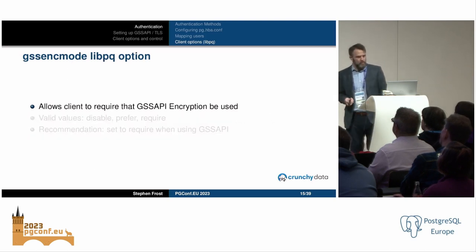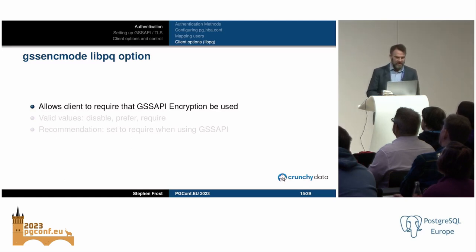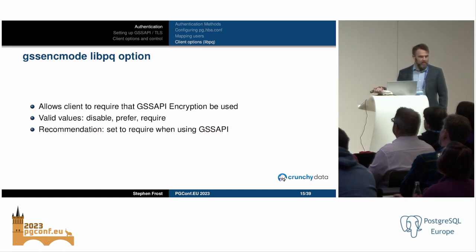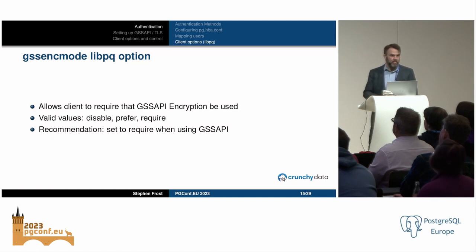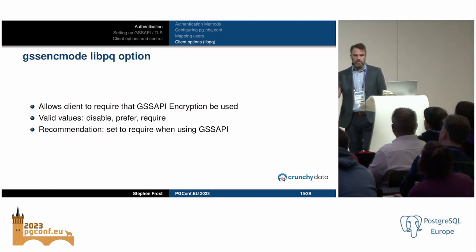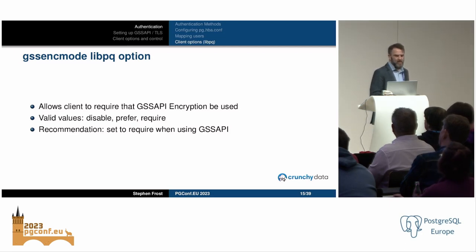Similar to SSL mode, there is a gss_enc_mode option which allows the client to require that GSS API encryption be used. If you're using GSS API, my recommendation is to set this to require so that the client is actually forcing encryption with GSS API when connecting to Postgres.